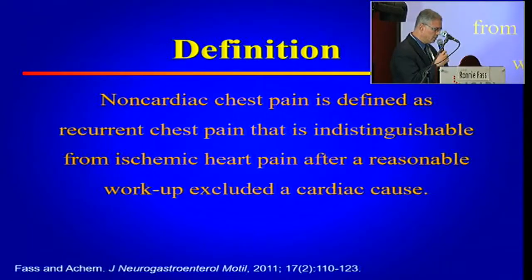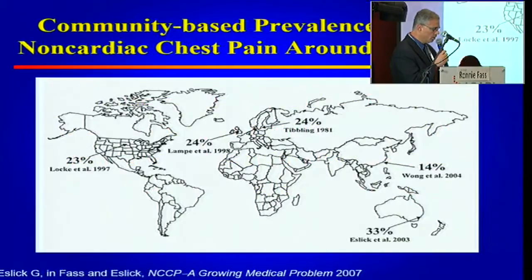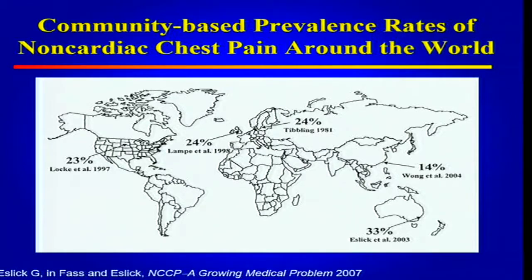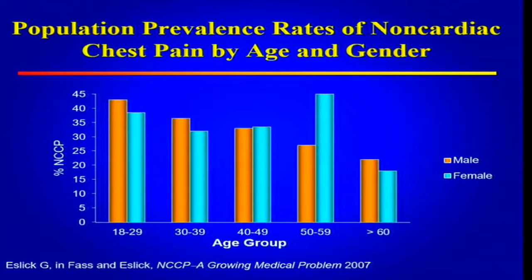When you look around the world, it appears that up to 20% of the adult population will experience non-cardiac chest pain at least once during their lifetime, so it's very common. There's no gender predilection — it affects women and men at the same level. For some reason, between the ages of 50 and 59 we see it more commonly in females than males, and it also appears that as we get older we see less NCCP.